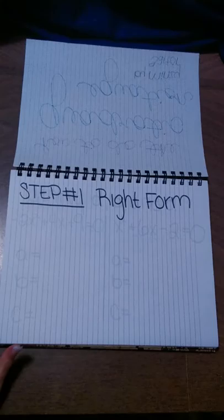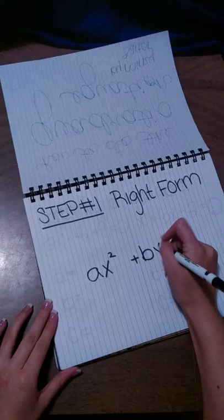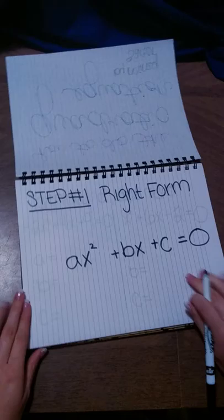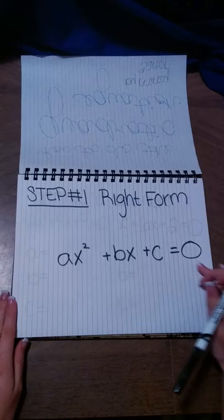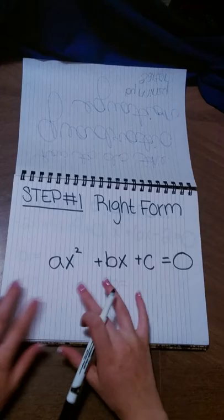Our first step in the quadratic equation is making sure that it's in the right form. The right form is ax squared plus bx plus c is equal to zero. This part is really important — making sure that it's equal to zero. A lot of people forget that, but if you don't have zero on one side of the equation and all this on the other, then it's not in the right form.